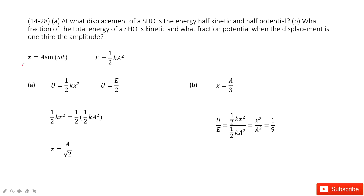We can see the function looks like this. And we know the total energy is one half k A squared, right? Because the energy is conserved — when it reaches the maximum amplitude, the total energy is just the elastic potential energy. So one half k A squared.